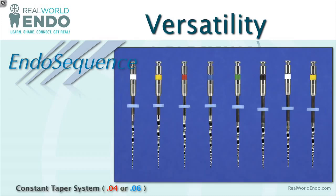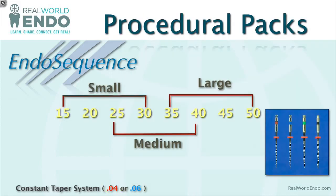What's also beautiful about EndoSequence is its versatility. The system has sizes 15 through 50 in 06 taper — designated by blue stoppers — and sizes 15 through 80 in 04 taper, designated by red stoppers. I have really moved from 06 tapers to 04 tapers, and in my practice 100% of cases I'm only using 04 taper, because it saves a lot of coronal dentin. The important part for endo success is a larger apical preparation, not necessarily a larger coronal preparation.